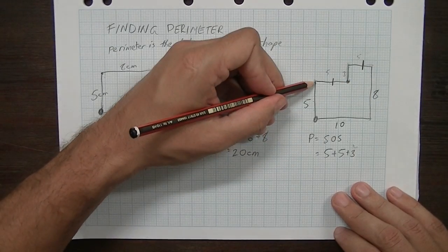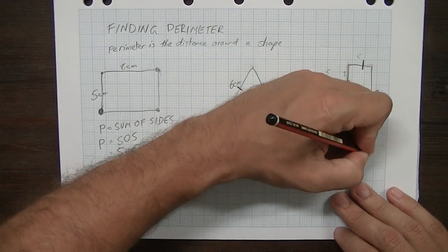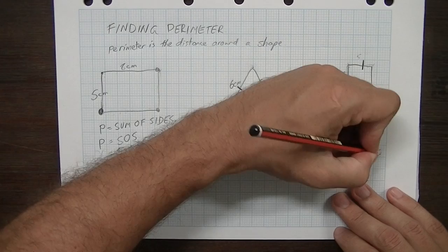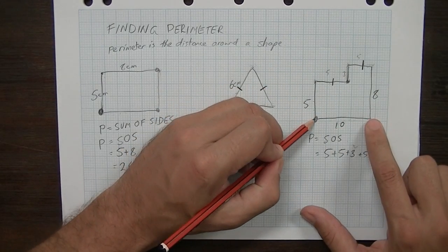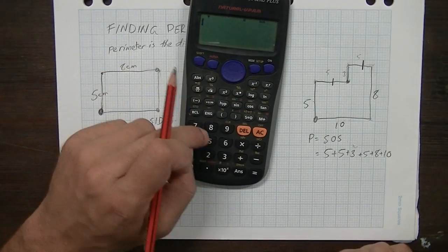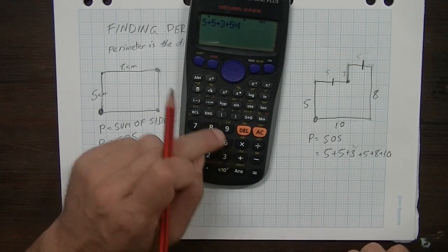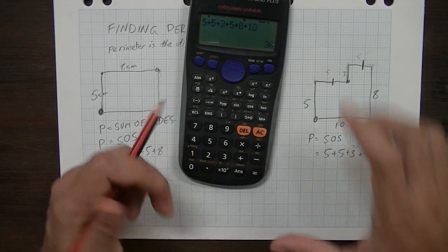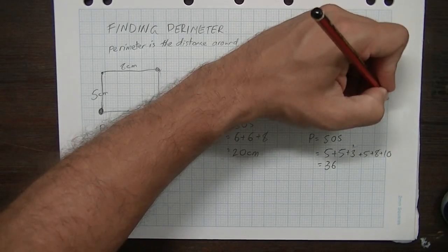So, 5 plus 5 plus 3 plus 5 plus 8, and finally, back to where we started, plus 10. Okay, so if you grab your calculator, easy enough, 5 plus 5 plus 3 plus 5 plus 8 plus 10. That's 36, we'll call it centimeters again.